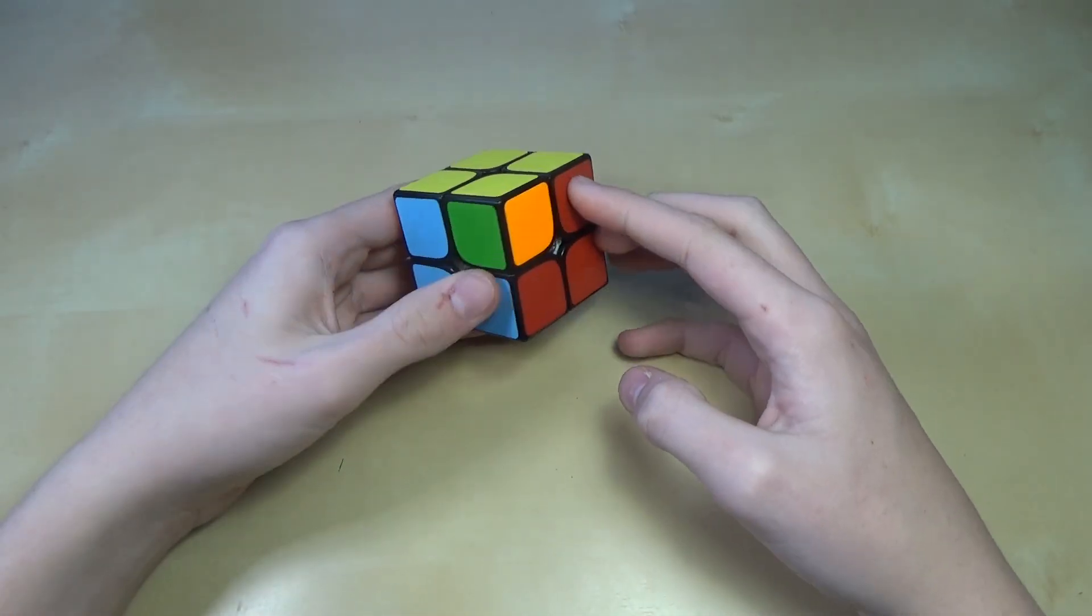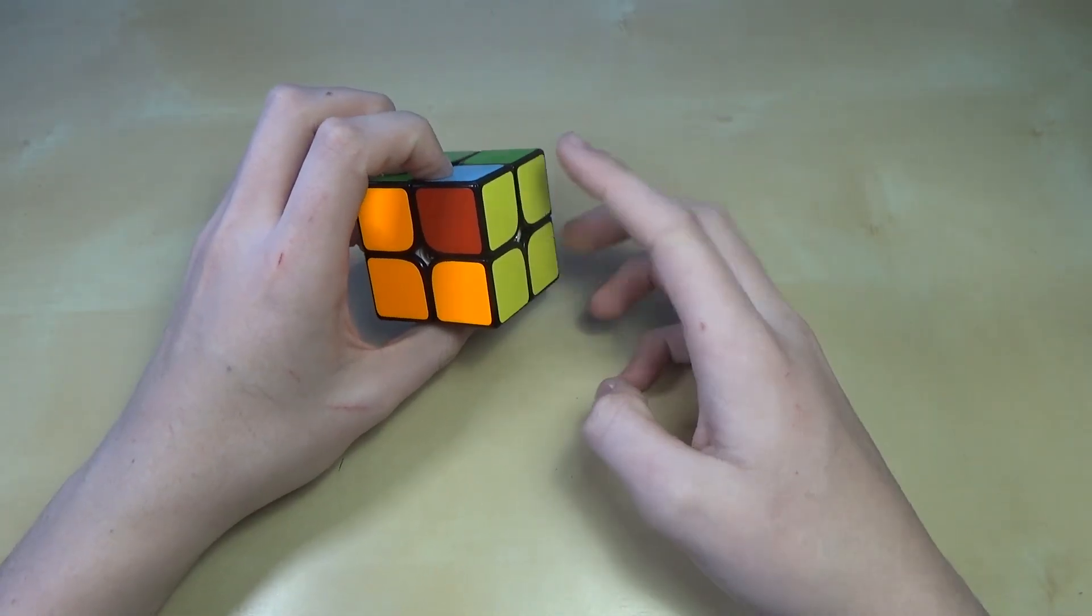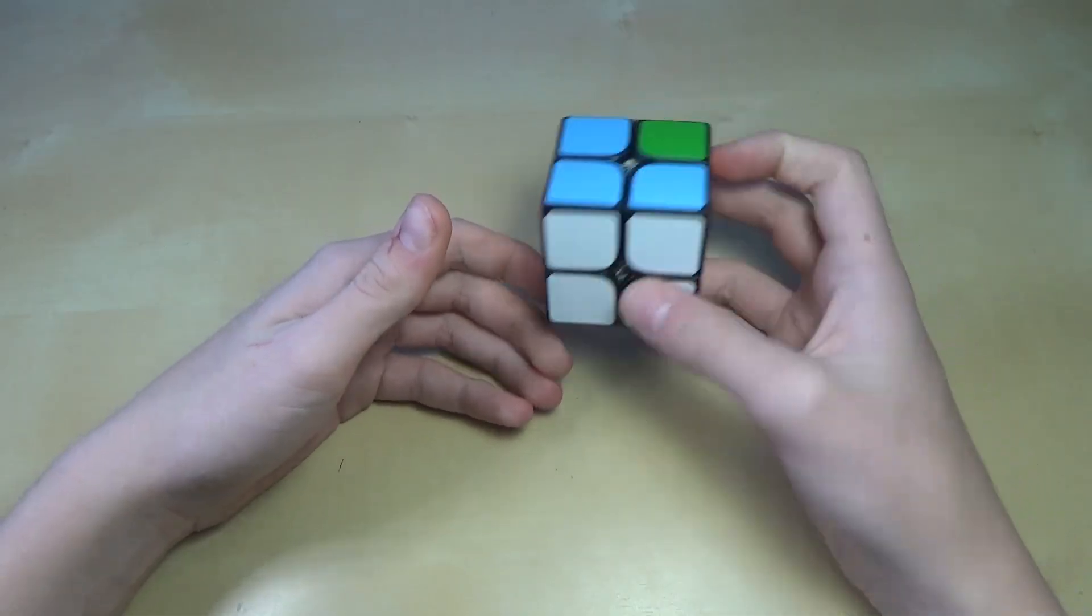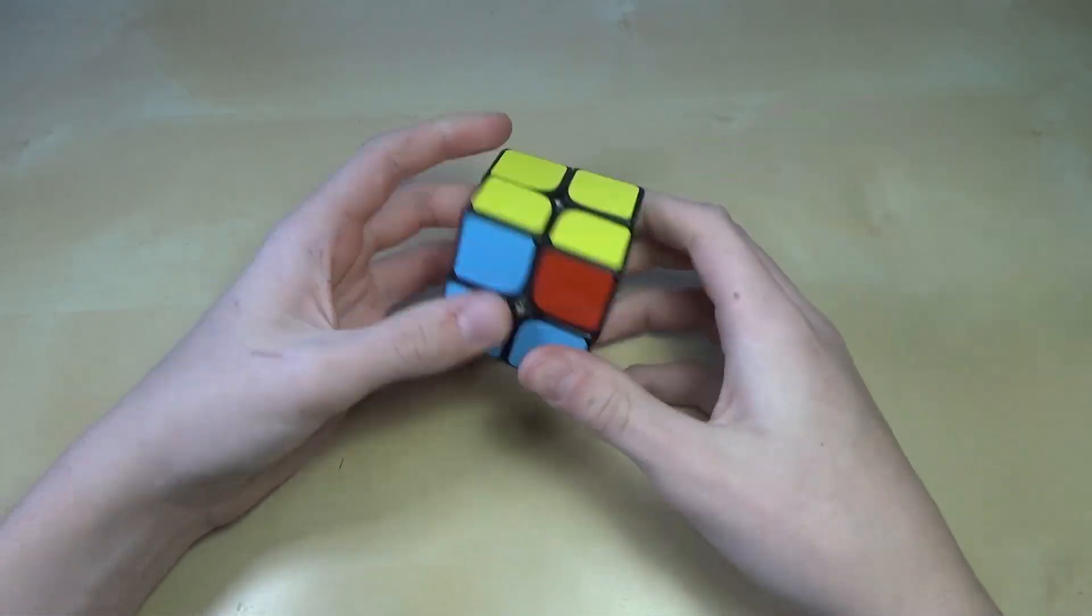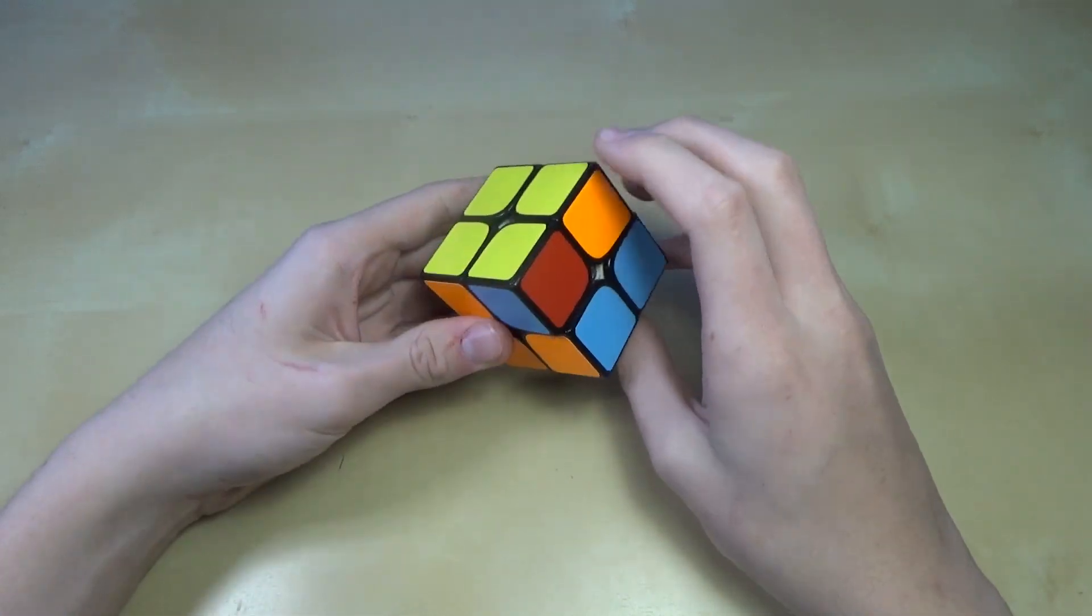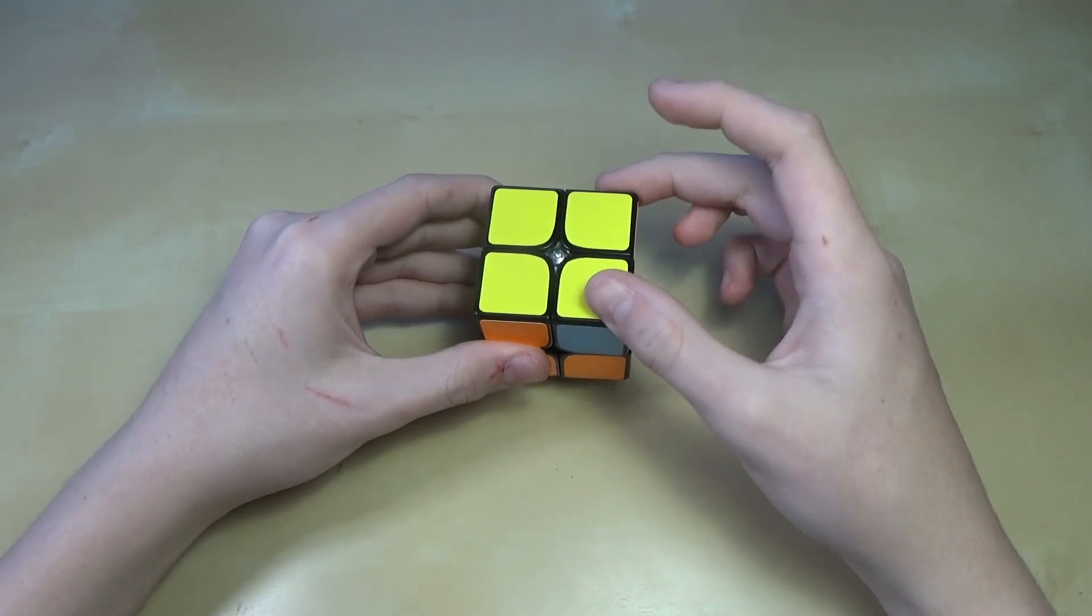There we go. And now we get to the last layer. And this is one more case that you can get, the opposite thing I showed you earlier. And what you want to do is just do your T-permutation, which I can do quite fast. And then line it up and do it once more with the two pieces that need to be switched right here.